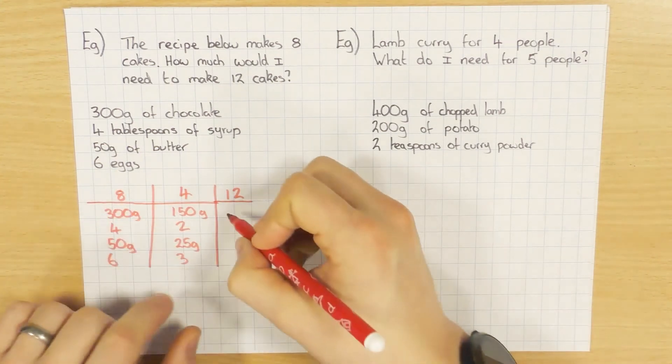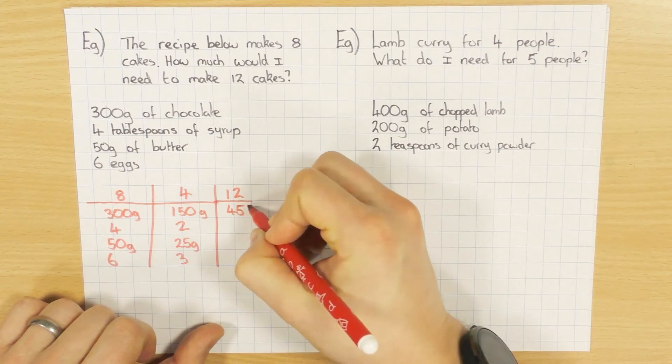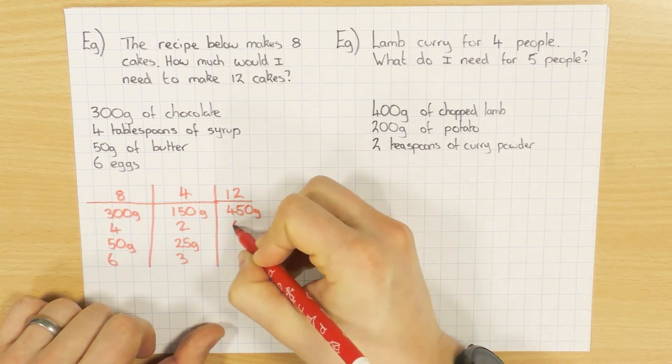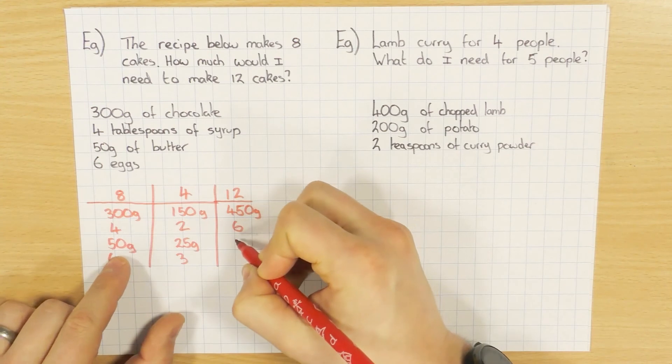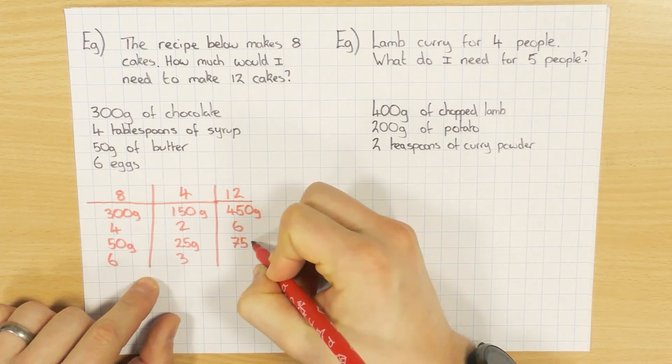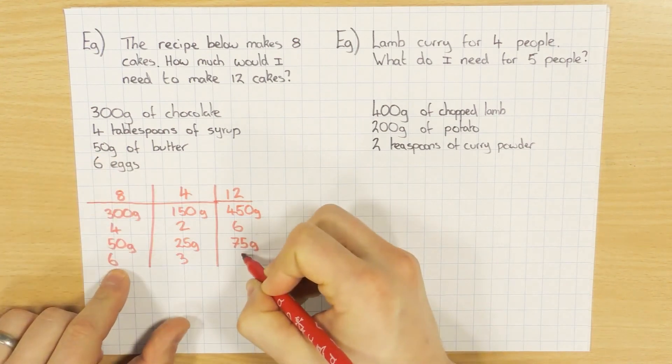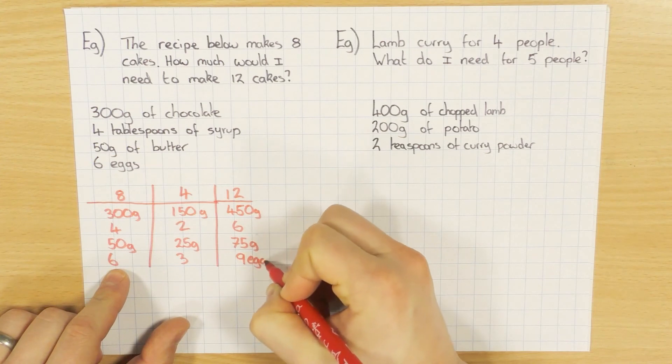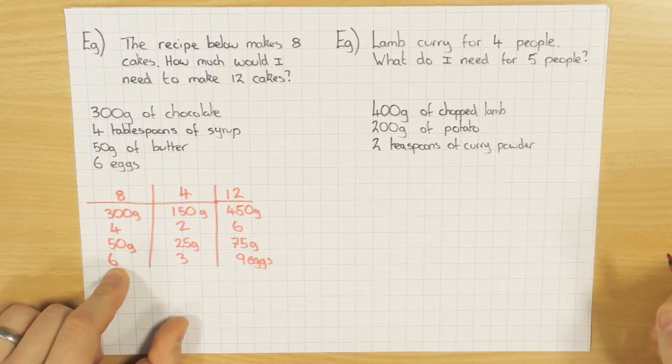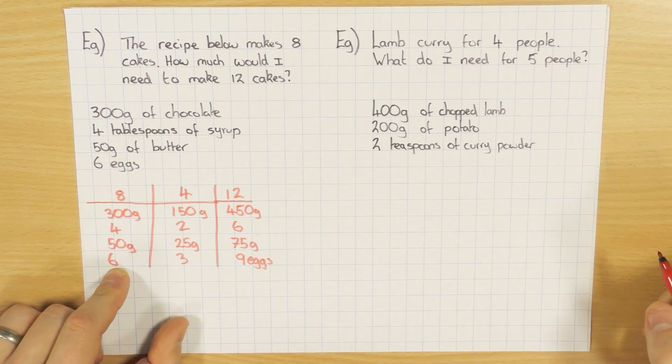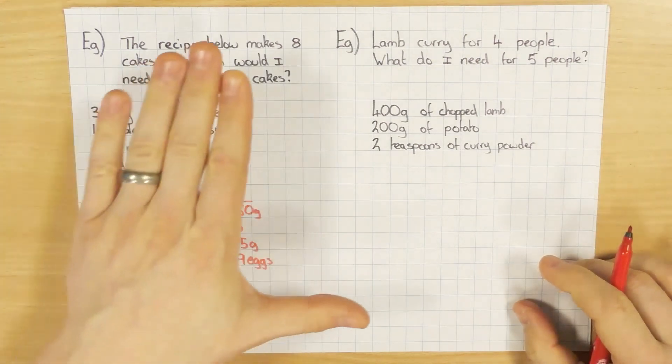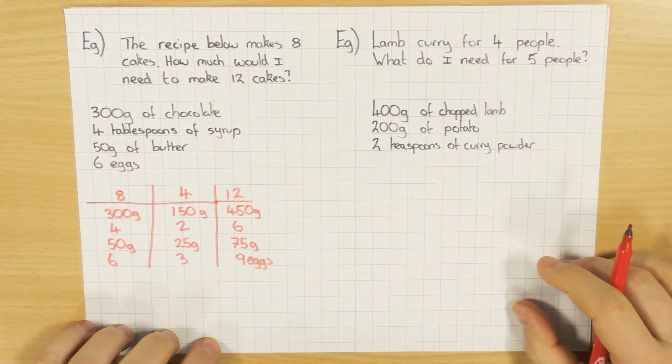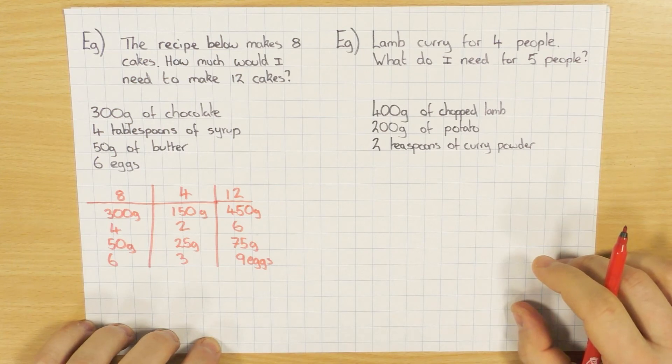And once you've got that, eight add four is 12. So you can add them together to get 450 grams, six tablespoons of syrup, 75 grams of butter, and then nine eggs. No idea what that makes. I'm not even sure it's edible, but it's just the idea. So that's what normally happens, which isn't an issue. You don't need to worry about finding what one is.